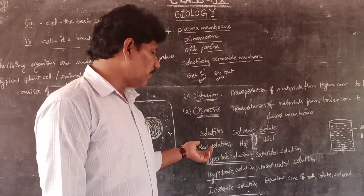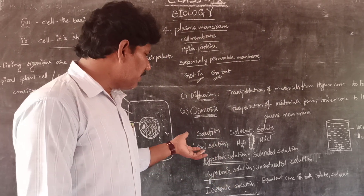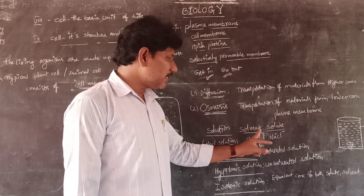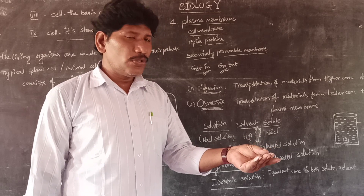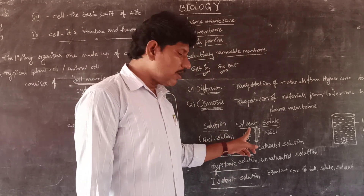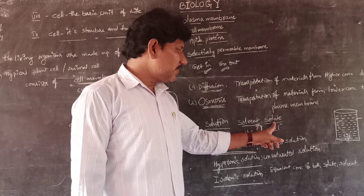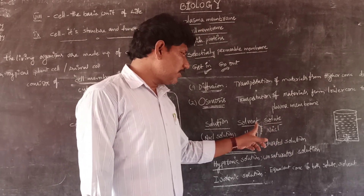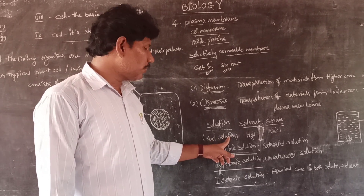Before coming to these two terms, it is better to understand what is meant by a solution and how to prepare it. A solution has two components: one is the solvent and the second is the solute. For example, adding sodium chloride — salt — to water: here water is the solvent, which dissolves the substances. The solute is the particular component which is dissolved. The combination of solute and solvent makes a solution — for example, NaCl solution, sodium chloride solution, or salt solution.